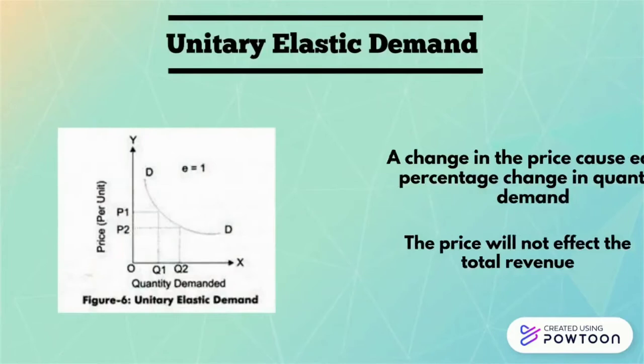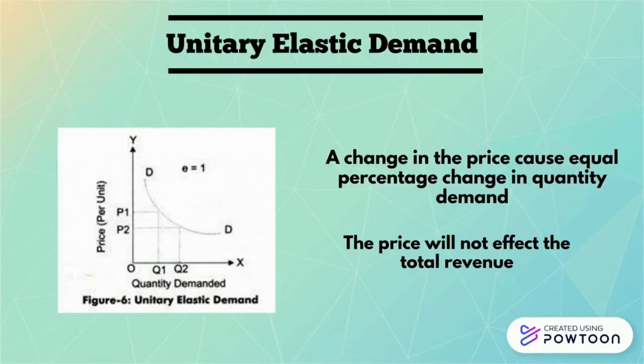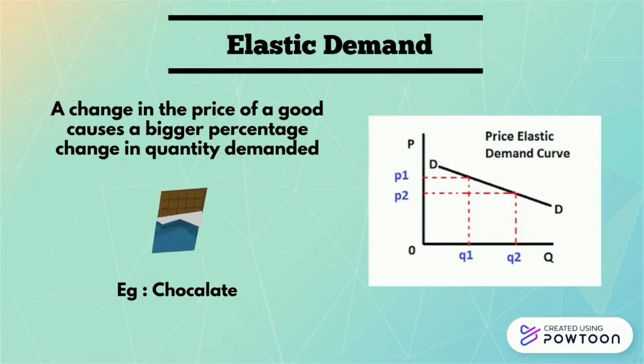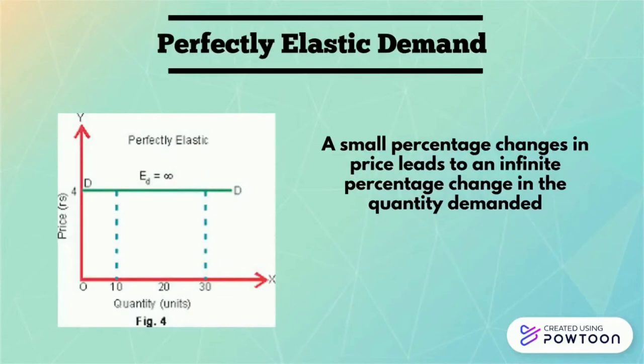The third one is unitary elastic demand, which is where a change in price causes an equal percentage change in quantity demanded. The price also will not affect total revenue. For the next one, elastic demand: a change in price causes a bigger percentage change in quantity demanded, for example chocolate. For the last one, perfectly elastic demand: a small percentage change in price leads to an infinite percentage change in quantity demanded.